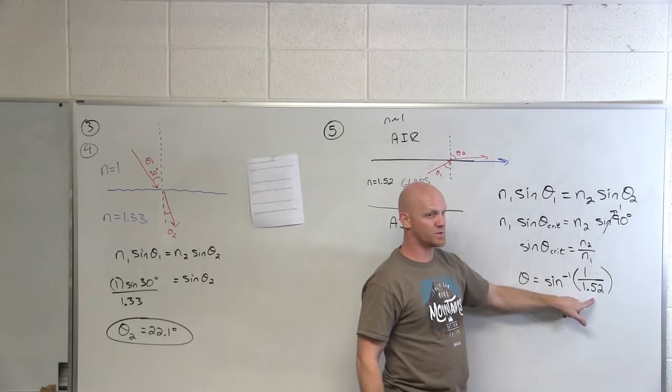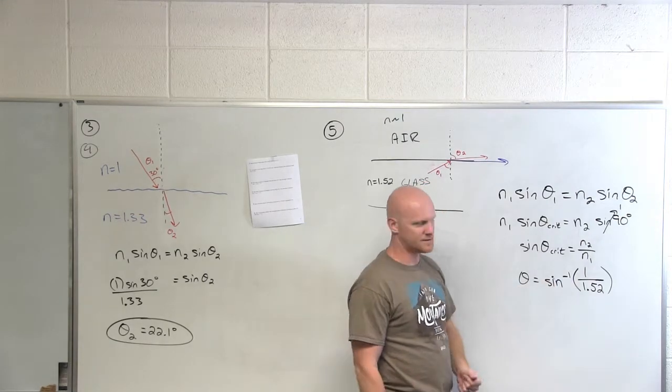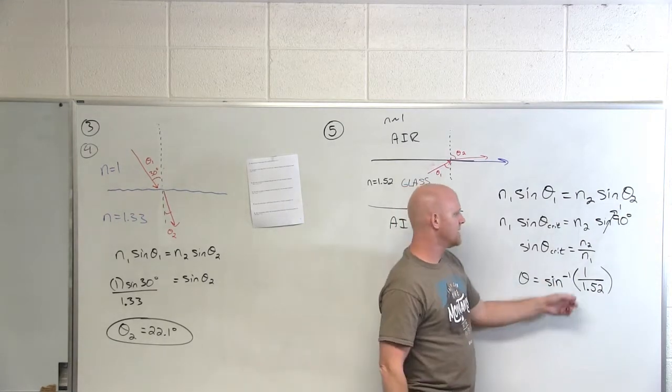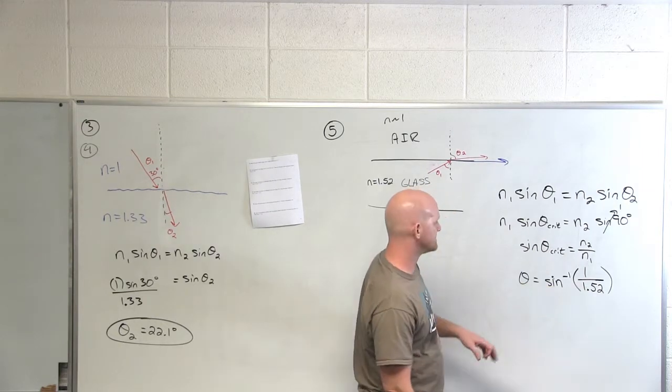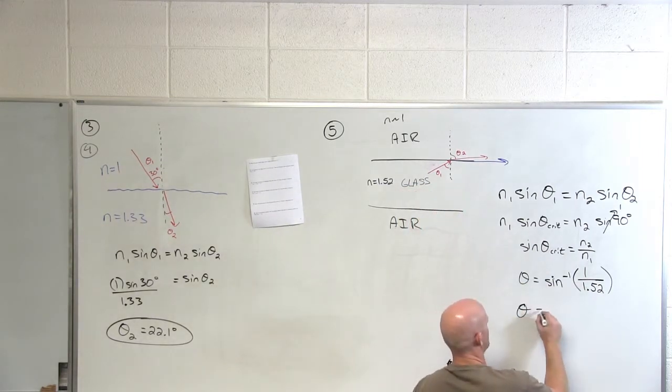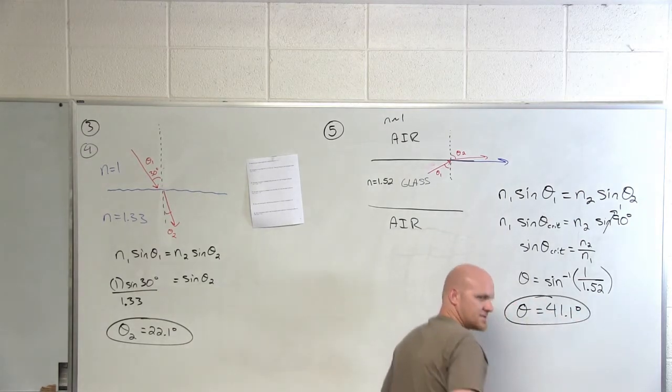Which would be a ratio bigger than 1. Can a sine function ever equal a number bigger than 1? No. Which is why that doesn't work—no physical answer there. But as long as you went from bigger to smaller instead, it works. What do we get for an angle here? 41.1 degrees. Fantastic.